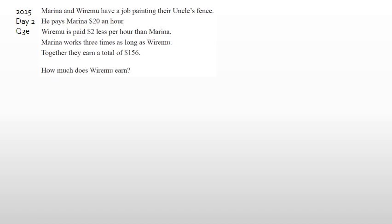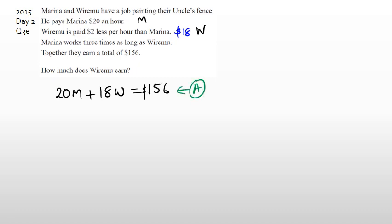Marina and Viramu have a job painting. Marina is paid $20 an hour; Viramu is paid $2 less, so $18 an hour. Marina works three times as long as Viramu. Together they earn $156. Our first equation: M is Marina's hours, W is Viramu's hours, so 20M plus 18W equals 156. That one line gets you your first achieved mark.